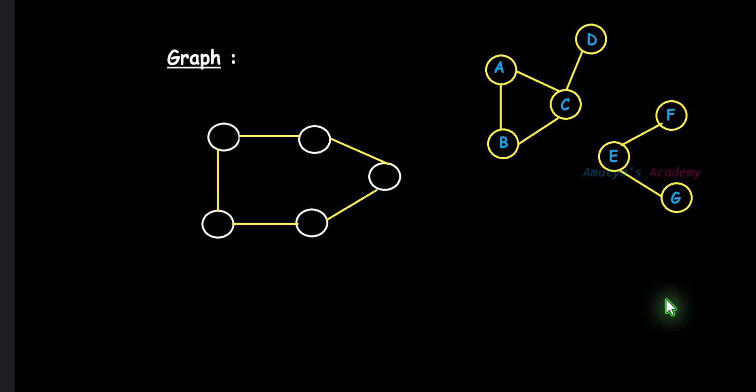Hello and welcome back to Amulya's Academy YouTube channel. We were discussing the BFS traversal algorithm. Today let's see how to use this BFS algorithm to check whether a given graph is a connected graph or a disconnected graph. A graph in which there does not exist any edge between at least one pair of vertices is called a disconnected graph.